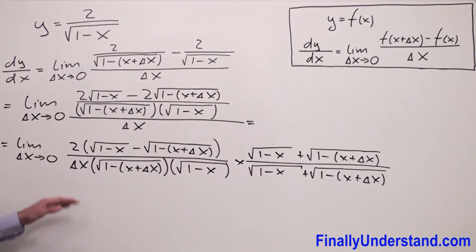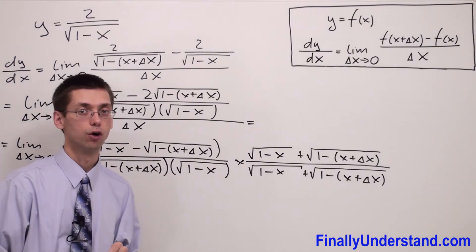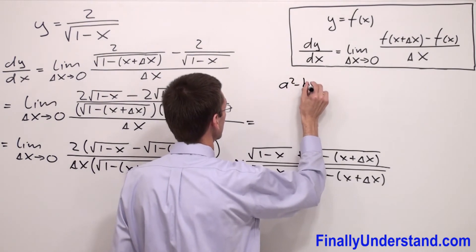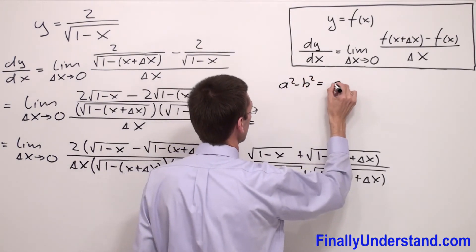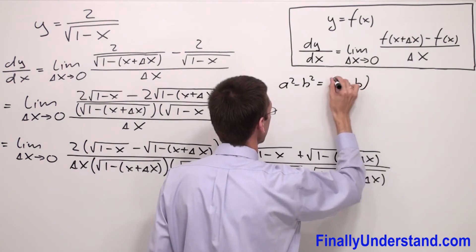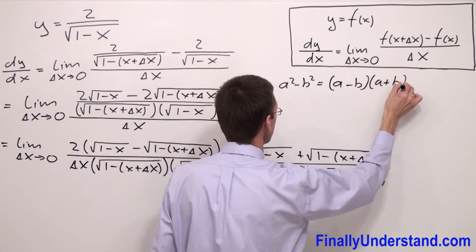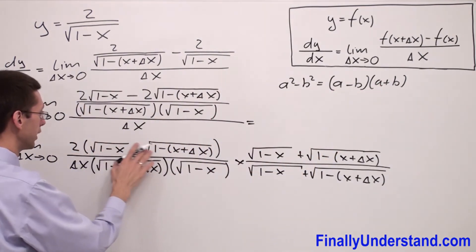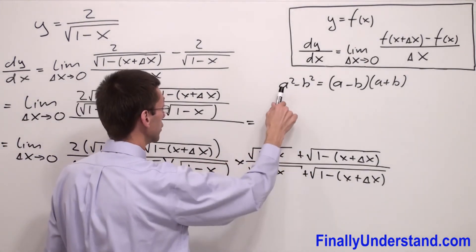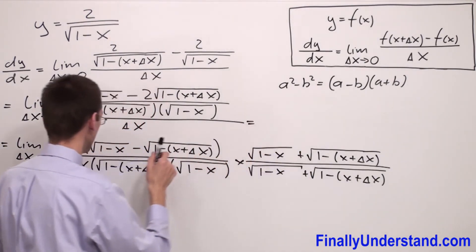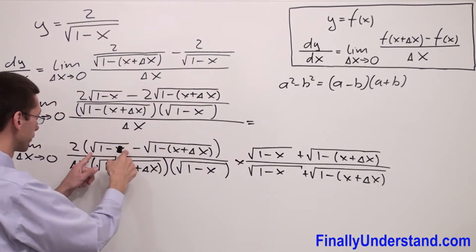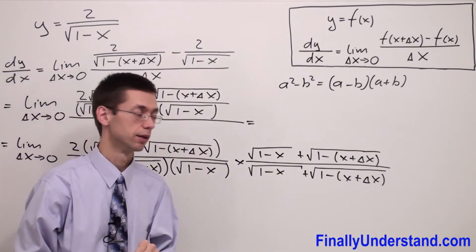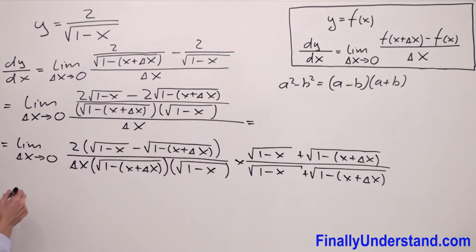Now we are going to deal with the difference of squares. Recall the formula: a squared minus b squared equals (a minus b)(a plus b). We have the form (a minus b)(a plus b) right now on the board, which equals a squared minus b squared. So squaring these terms will eliminate the square roots.